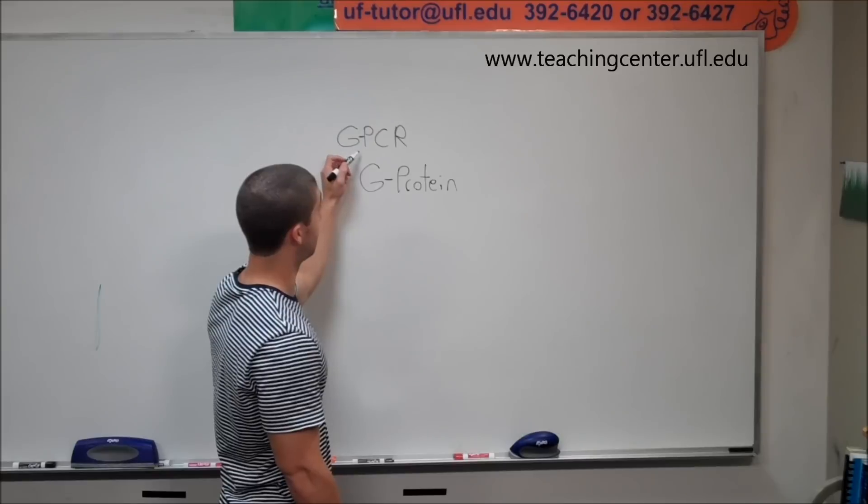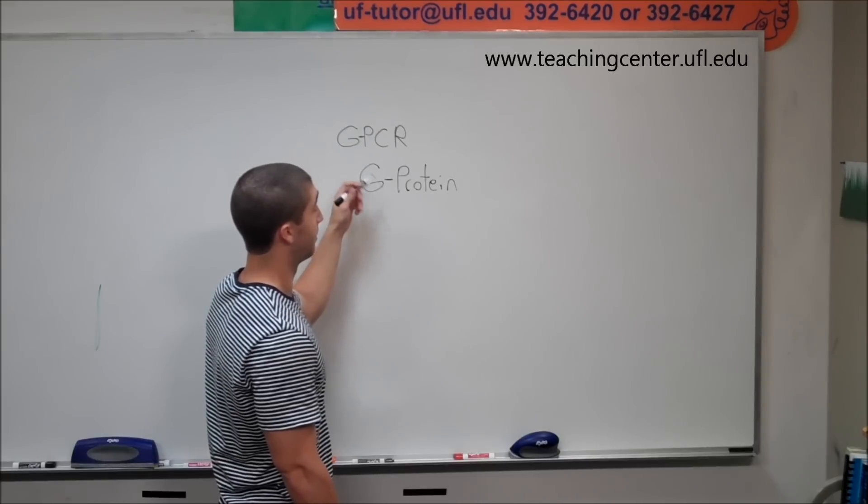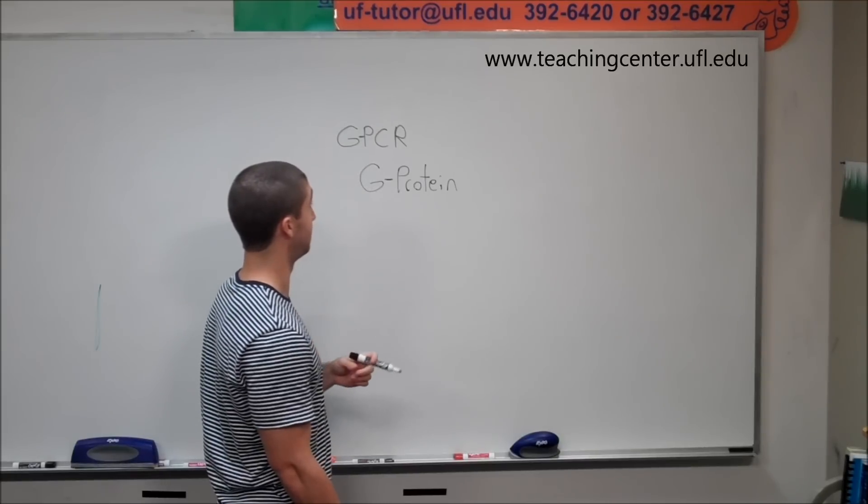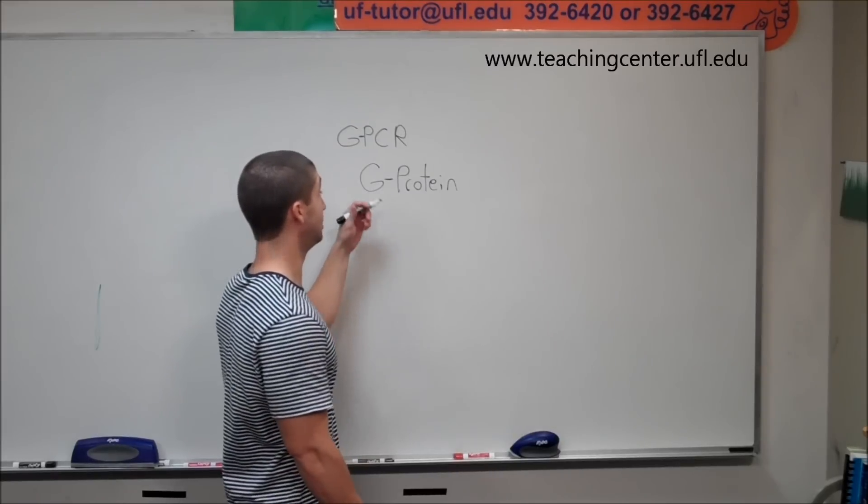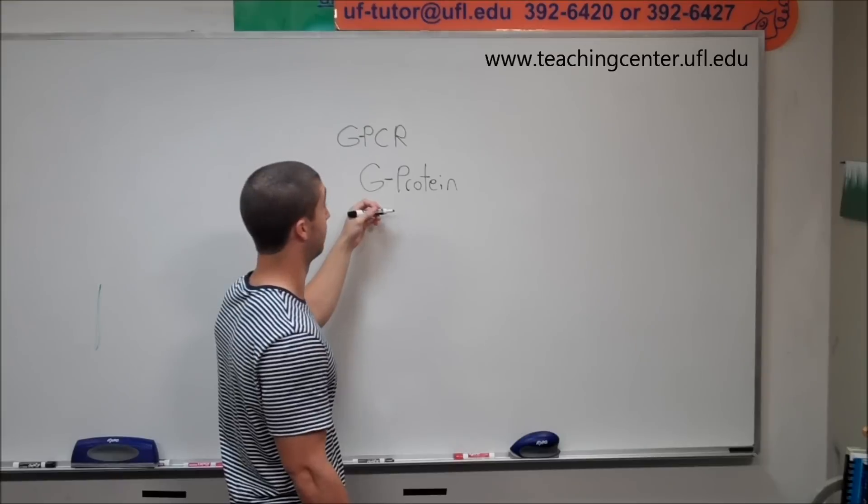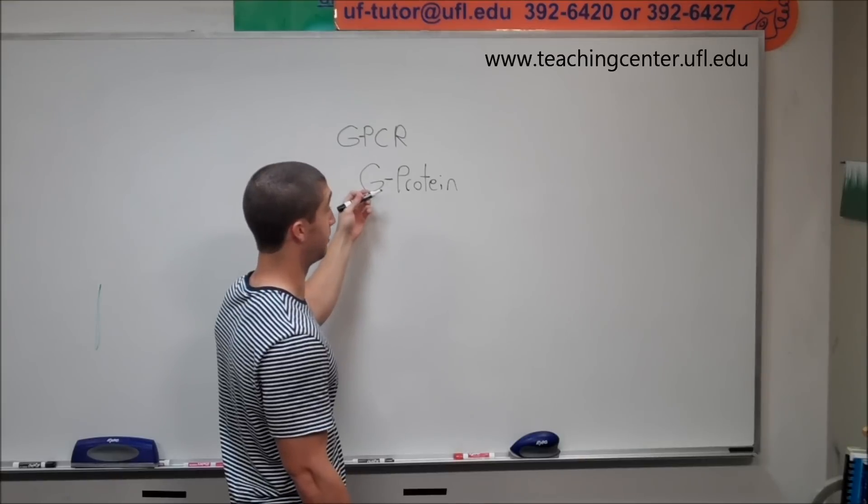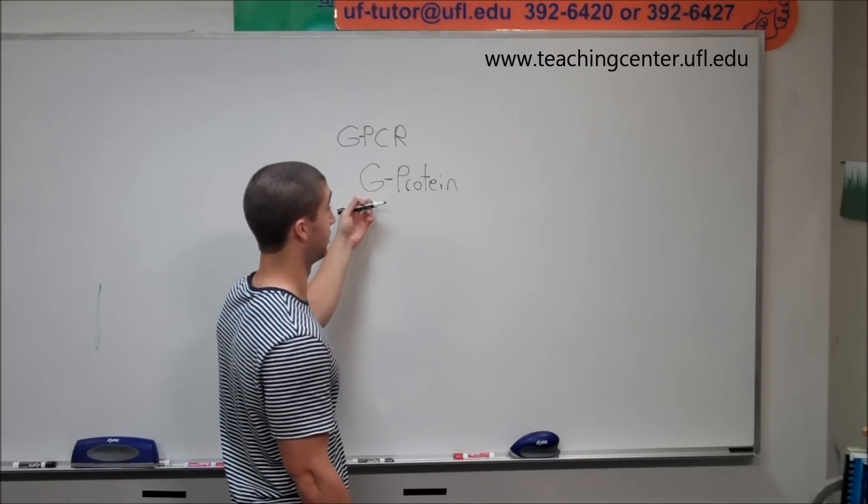So when GPCR gets activated, it can activate a G-protein by exchanging its bound GDP for a GTP. Okay, so when GDP is bound to the G-protein, it's going to be off. When the G-protein binds a GTP, that's going to turn it on.